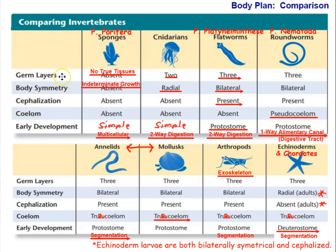The components of body plan include: the number of germ layers — either two or three; body symmetry — asymmetrical, radially symmetrical, pentaradially symmetrical, or bilaterally symmetrical; cephalization, meaning whether they have a head; the coelom, which is a second body cavity other than the digestive cavity; and early embryonic development — specifically whether they show protostome or deuterostome development.